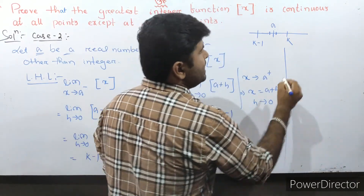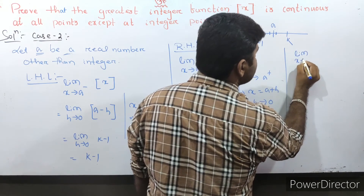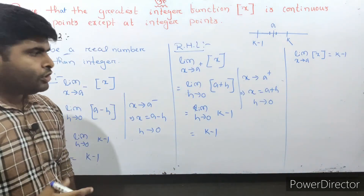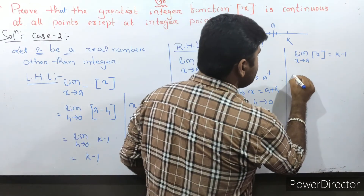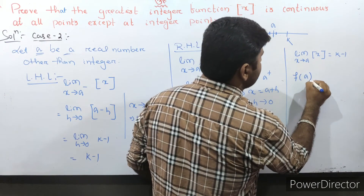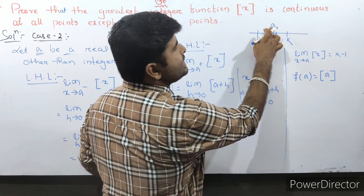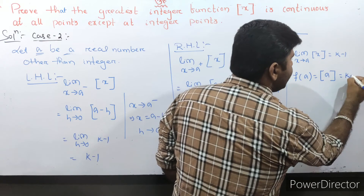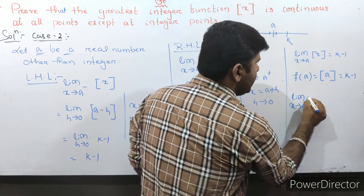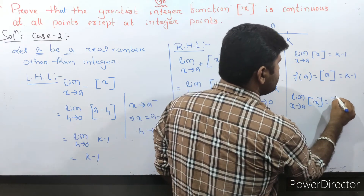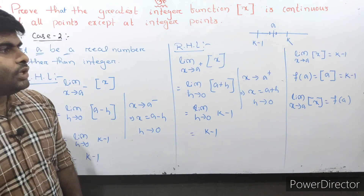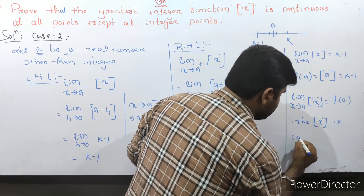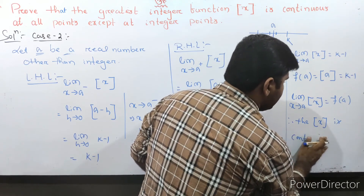Since LHL equals RHL equals k-1, the limit as x tends to a of the greatest integer of x equals k-1. The function value f(a) equals the greatest integer of a, which is also k-1. Since the limit equals the function value, the greatest integer function is continuous at a.